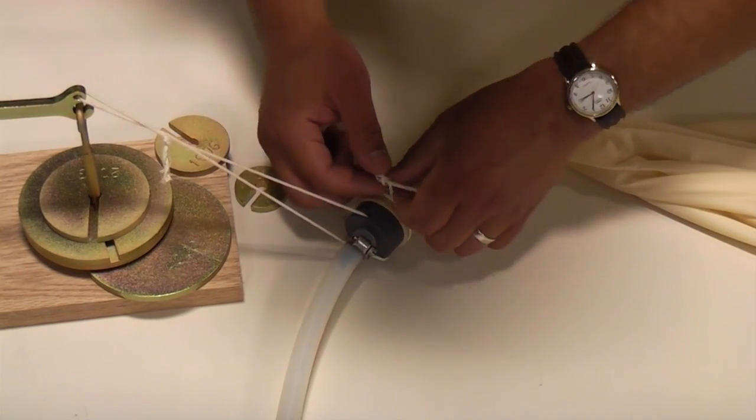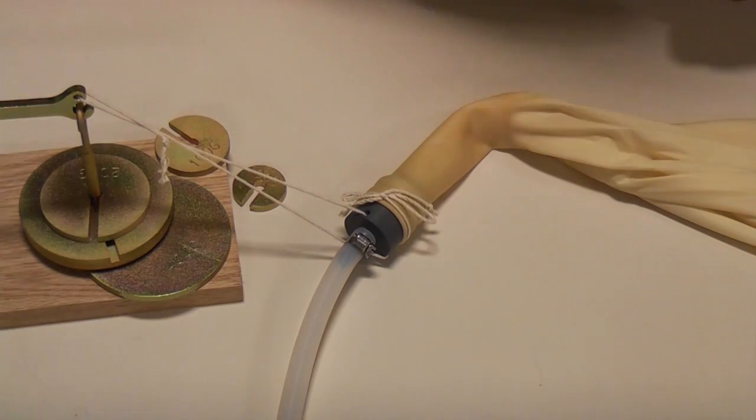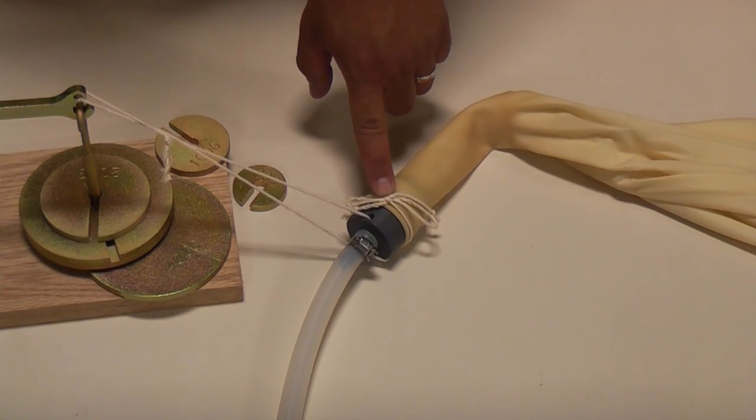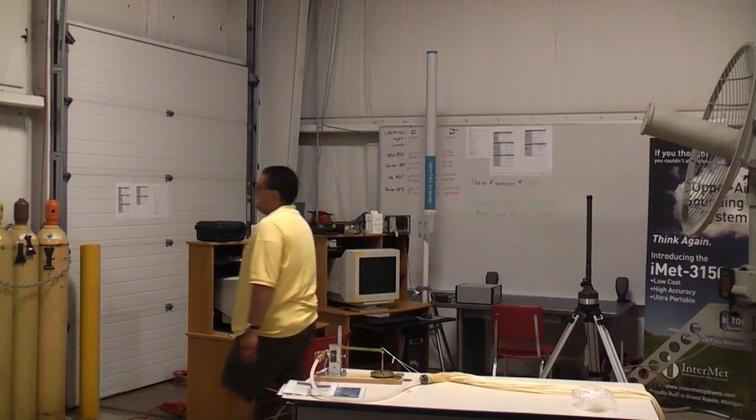I'll just make two little loops, loop them together, and pull tight. And that helps to hold the neck of the balloon onto the nozzle during the inflation. Now that we've got everything set, we can turn on the gas and begin the inflation.